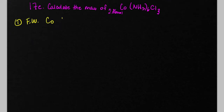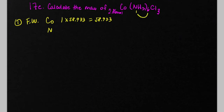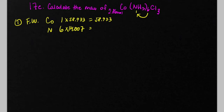So capital C, lowercase o, is cobalt, and there's one of those, and each one has a mass of 58.933. For nitrogen, there's a subscript of 1 that's not shown, and there's a 6 outside the parentheses, so there's actually 1 times 6, or 6 nitrogen atoms.